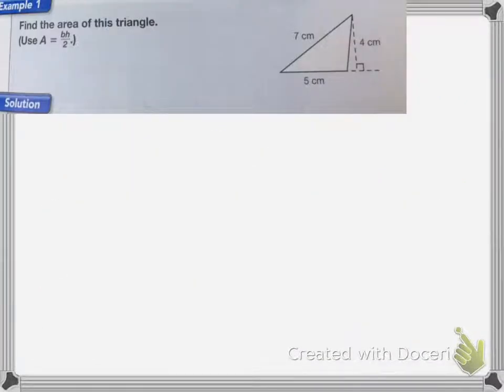So I want us to find the area of this triangle. Now remember, the area of a triangle is base times height divided by 2. And remember that the height has to be perpendicular to the base. So here in my triangle, my base is going to be 5 centimeters. So I'm going to have 5 times my height.